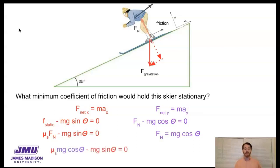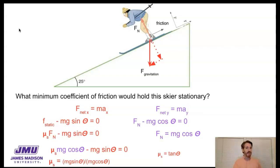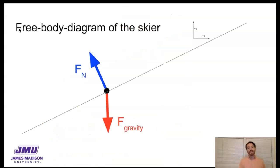Substituting in: mu times mg cosine theta minus mg sine theta equals zero. Solving for the coefficient of static friction gives mg sine theta divided by mg cosine theta. The m and g both divide out, leaving the coefficient of static friction equal to sine theta over cosine theta, which is tangent theta. The minimum coefficient of friction to hold the skier stationary is therefore tangent of 25 degrees, giving 0.47. Remember, there are no units for a coefficient of friction because it is a coefficient.